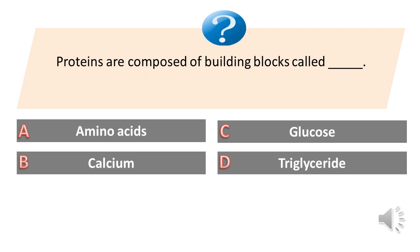Proteins are composed of building blocks called: A. Amino acids. B. Calcium. C. Glucose. D. Triglycerides. Answer is A. Amino acids.